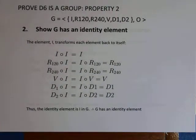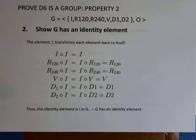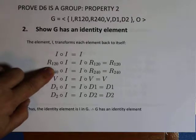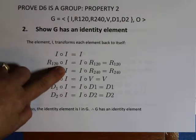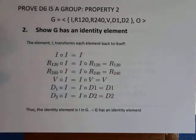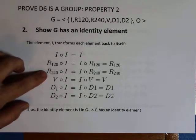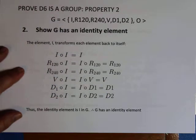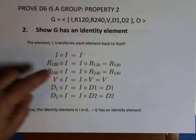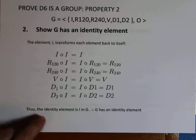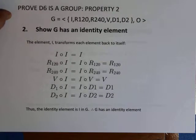Next I show there is an identity element. The identity element transforms each element back to itself. The composition of I with itself gives the identity. Composing R₁₂₀ with the identity — which is no movement — still gives R₁₂₀. A rotation of 240 degrees likewise remains 240 degrees, because the identity is the no-movement triangle and nothing has changed. So our identity element is I, and our group has an identity element.